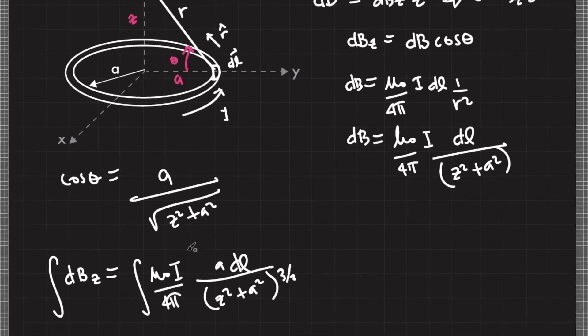constant, constant, constant, and constant based on the figure. So no matter what element you choose, the value of each variable in these terms are constant. So I'll put it outside the integral sign, so I'll end up with mu naught I A over 4 pi Z squared plus A squared raised to 3 halves integral of DL.